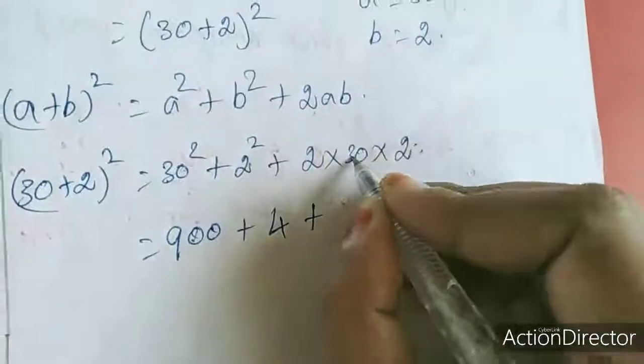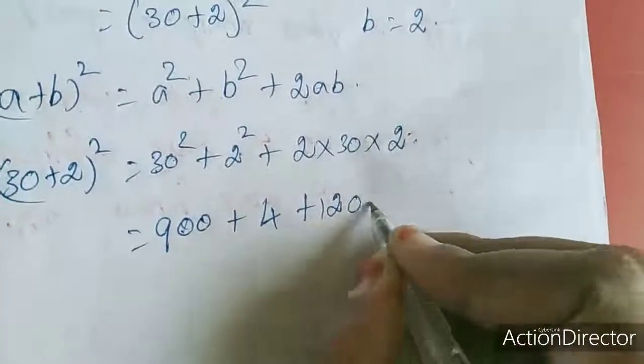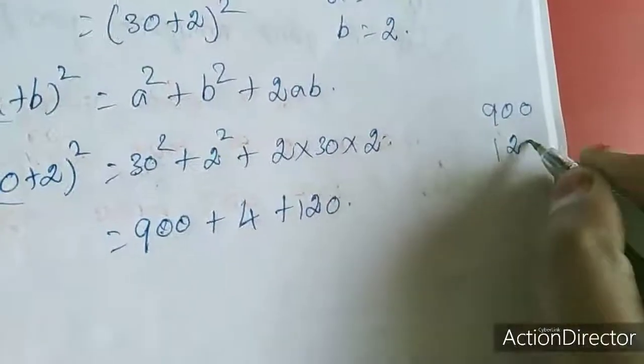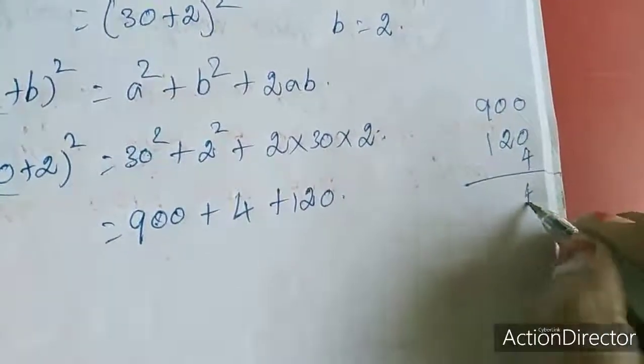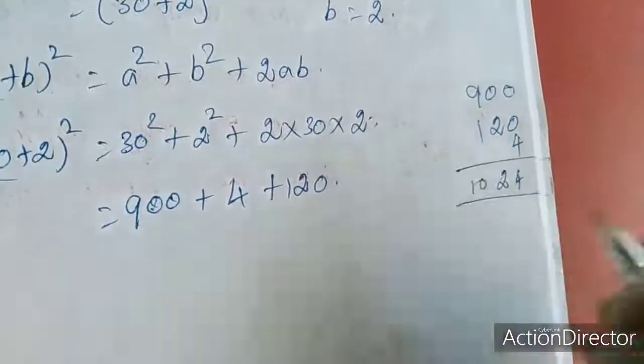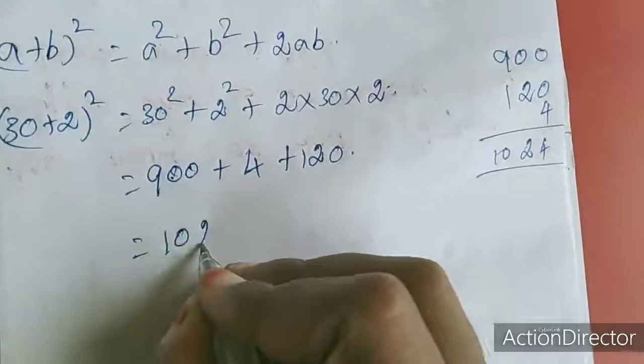2 times 2 is 4, 4 times 3 is 12. So I am going to add here, so the answer is 1024.